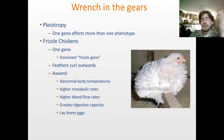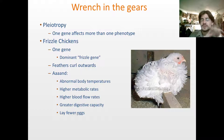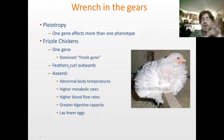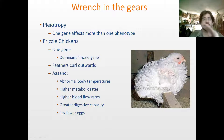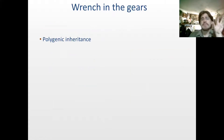I want you to know what pleiotropy is — possibly know that a frizzle chicken is an example. The frizzle gene is an example of pleiotropy, but you don't necessarily need to remember all the phenotypic alterations it causes. Next up: polygenic inheritance.